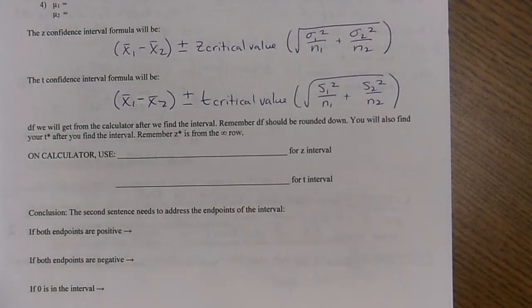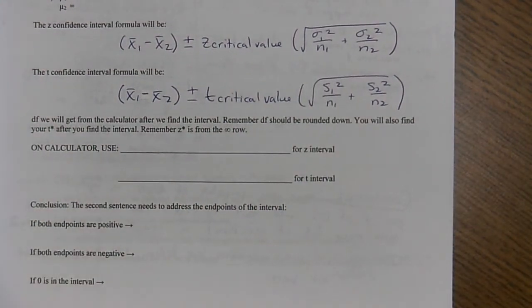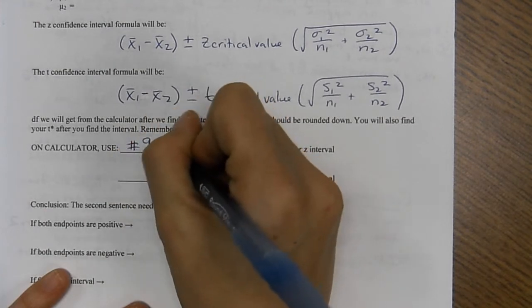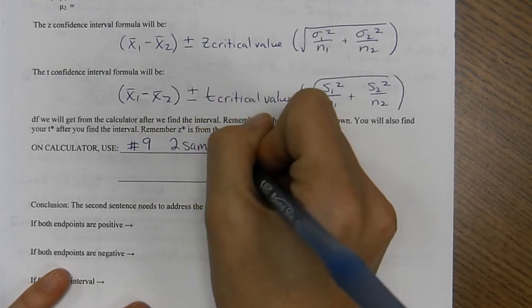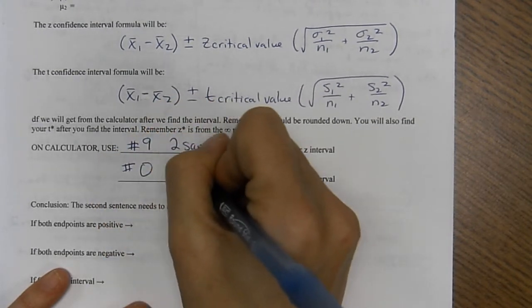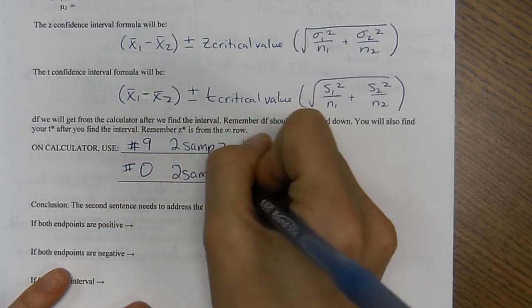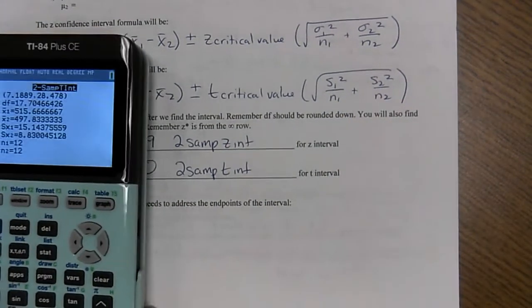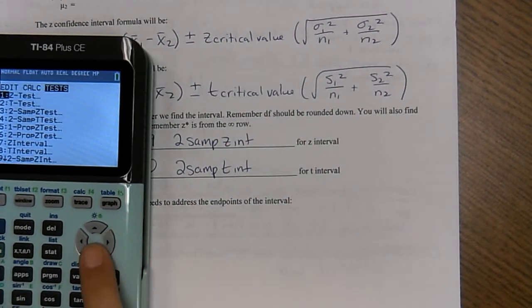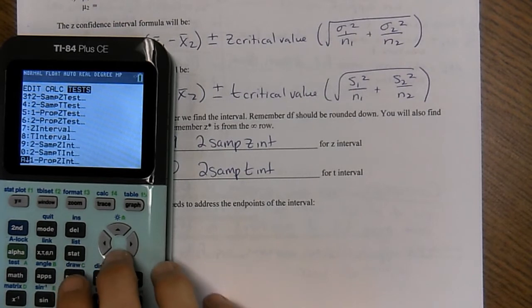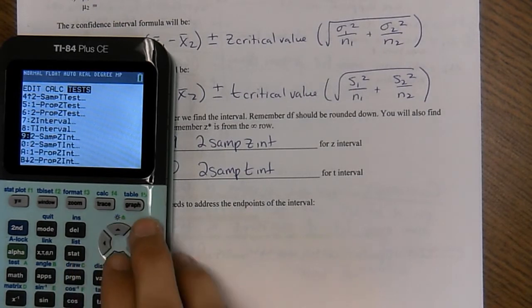Which calculator ones you're going to use? This is going to be interval test number nine, which is a two sample Z interval or test zero, two sample T interval. So we're going to focus on test nine and zero.